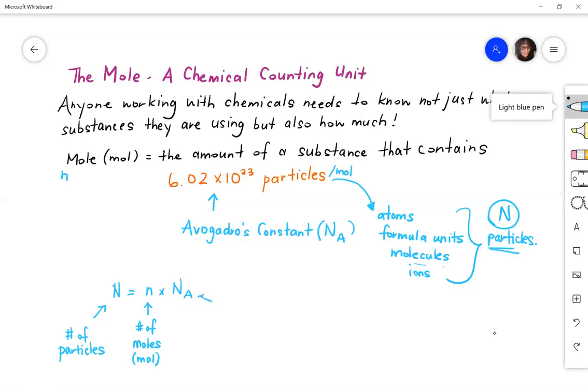And then the Na is your Avogadro's number, or your Avogadro's constant. And you don't have to calculate the Avogadro's constant. Remember that number is 6.02 times 10 to the 23 particles per mole.